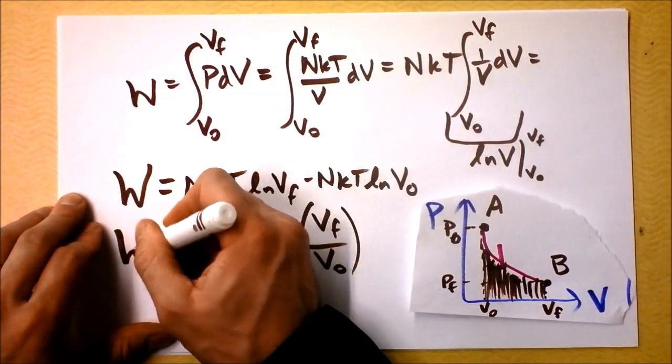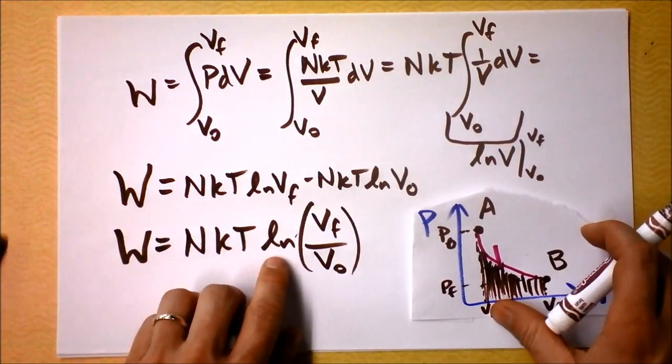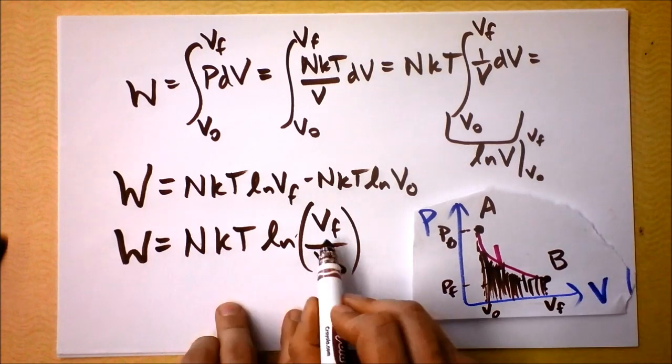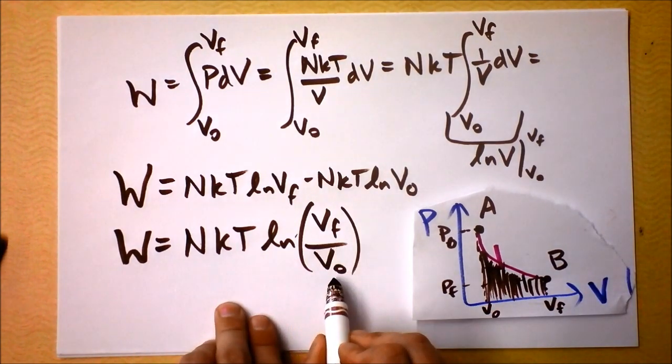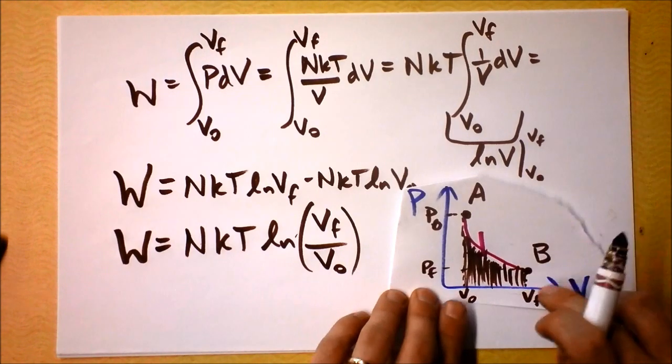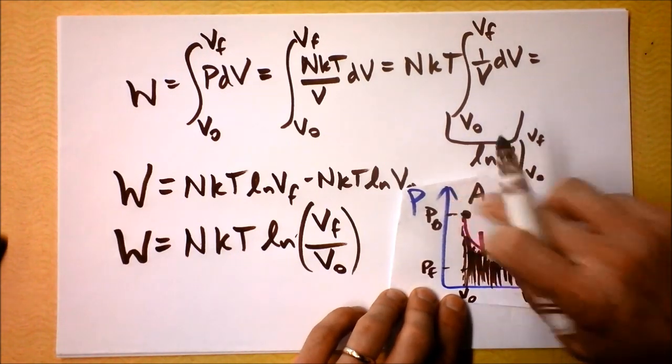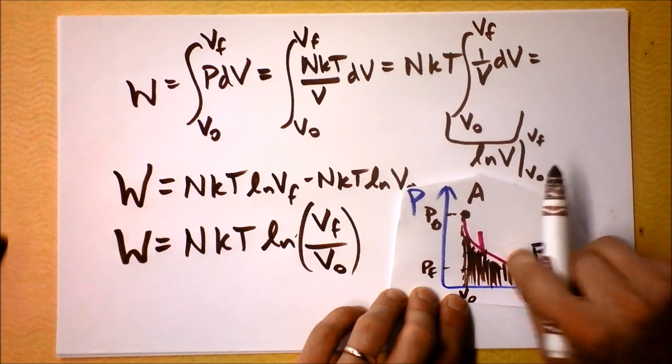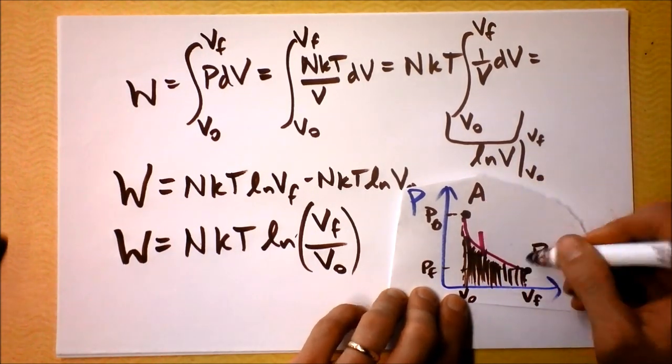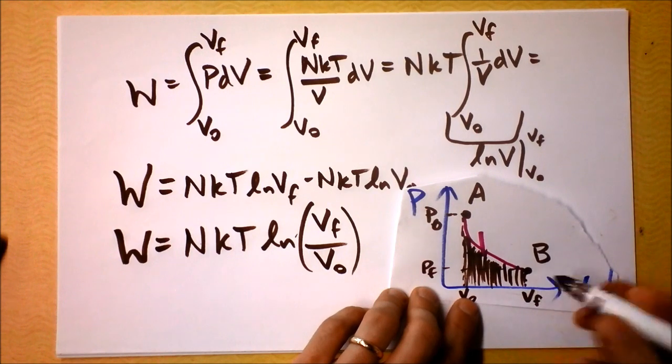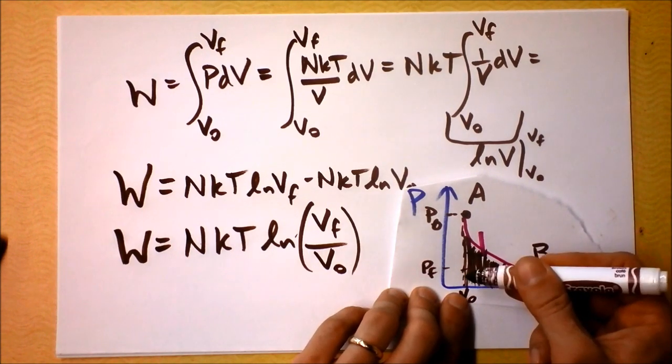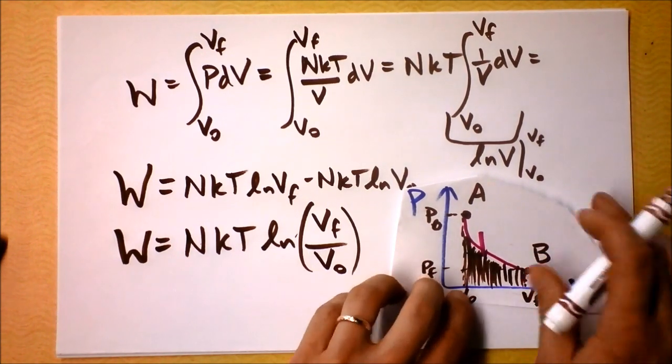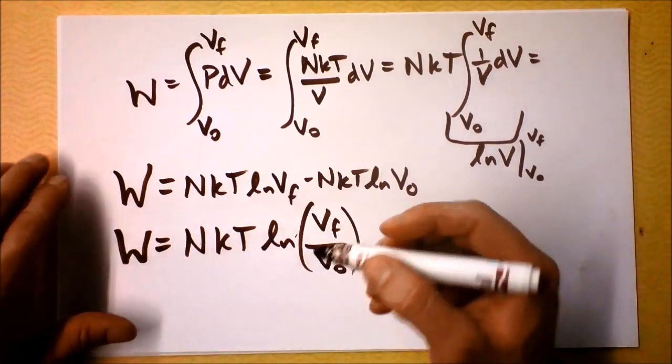This is the work that's done by the gas. And it's a positive number as long as the final volume is greater than the initial volume. But if I go from here to here, if I go from a big volume to a small volume, then the work that will be done will be negative. So all of this is the same temperature. But if the gas is expanding, then we're doing positive work. And if it's not expanding, if it's contracting, then we're doing negative work.